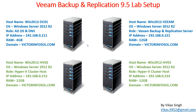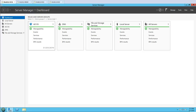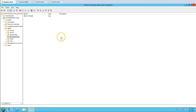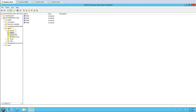This is my lab environment for this video. We have four virtual machines in use. The first virtual machine is the domain controller, which is Win2K12-DC01. You can see the DNS role is running on this machine, and my domain name is victorinfosol.com. We can open Active Directory Users and Computers and you can see our OUs, servers, VMs — everything is there.